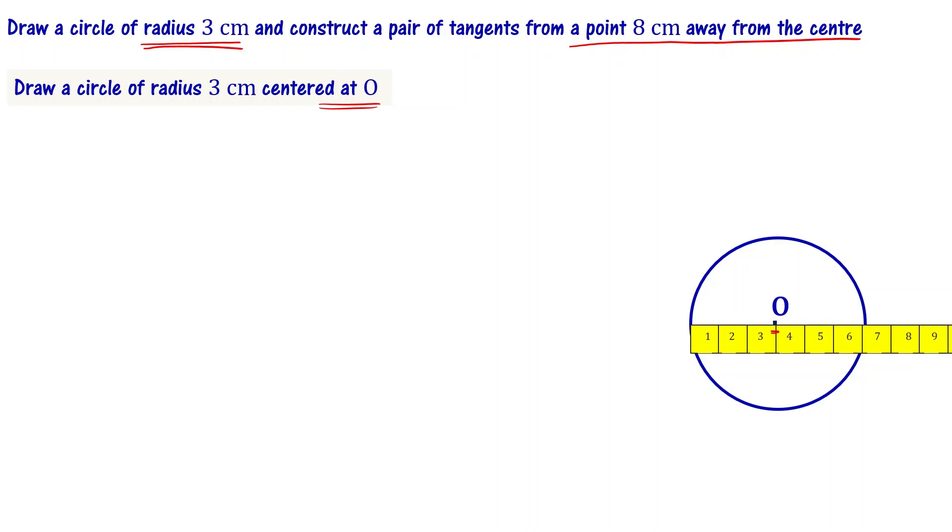Now we have to mark a point 8 cm away from the center. We have to mark a point, a point P alone. Let's mark that. Once you are done with this, we have to draw a pair of tangents from the point P to the circle.